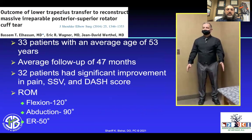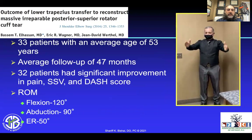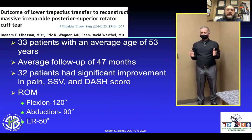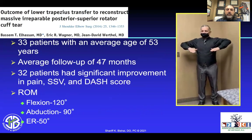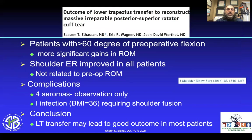The outcomes for lower trapezius transfer: 33 patients with an average age of 53 years, average follow-up about 47 months, showed much better forward flexion, abduction, and external rotation. One of my patients at the three-month visit — the right side being the lower trapezius transfer — was very happy. This was an irreparable supraspinatus and infraspinatus. Patients with greater than 60 degrees of preoperative flexion had more significant gains in range of motion. Complications included forced aromas, one infection requiring shoulder fusion. The conclusion: lower trapezius transfer may lead to good outcomes in most patients.